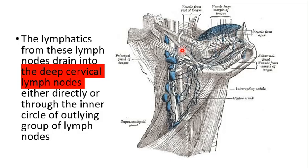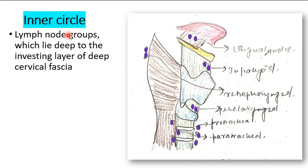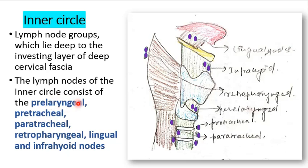The lymphatics of all of these outer circle nodes drain into the deep cervical lymph nodes either directly or indirectly through the inner circle. The inner circle of lymph node groups lies deep to the investing layer of the deep cervical fascia. Key structures to note include: the hyoid bone, thyroid cartilage, cricoid cartilage, tracheal rings, and the hyoglossus muscle between the tongue and hyoid bone. The first group are the pre-laryngeal lymph nodes, lying on the cricothyroid membrane.